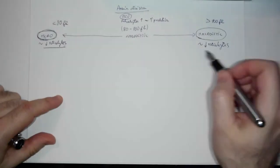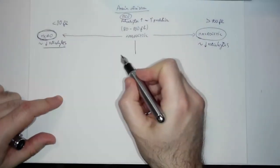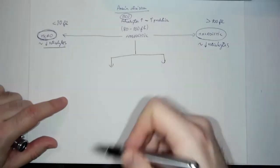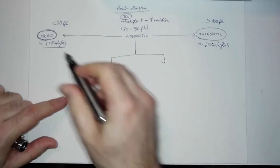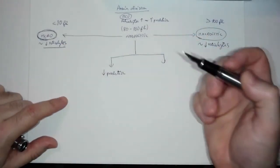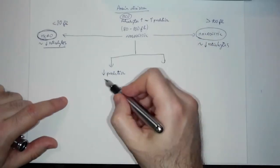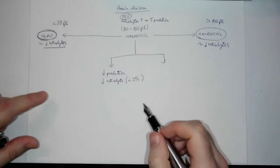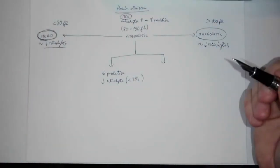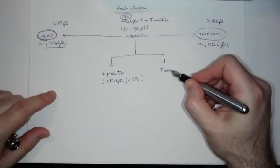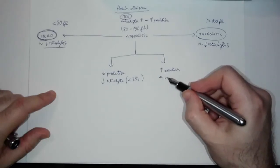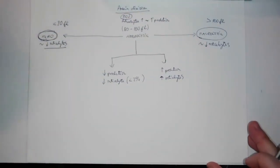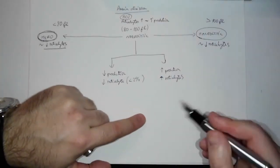Where reticulocytes really help us is in normocytic anemia, where we can have two scenarios. In one scenario, there's decreased production — same as in the other types, but here the femtoliters won't help me, so I check the reticulocytes, and they will be decreased below 2%. If production is increased due to hemolysis or bleeding, reticulocytes will be increased — above 2%.